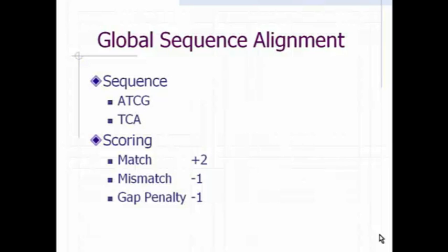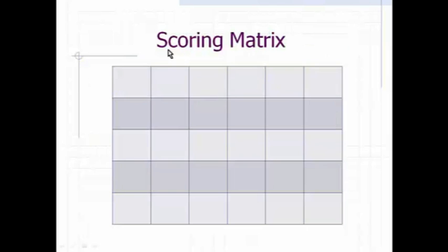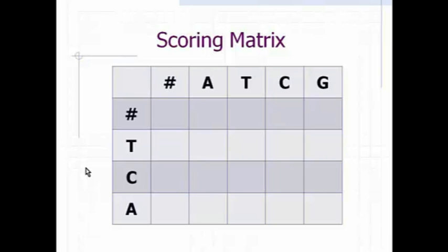First we will make a matrix and place our sequences at both coordinates. At any coordinate we have to put a gap — it is very important and the gap aligns to the initial threshold. We put our sequences ATCG and TCA to both coordinates, and we put a gap penalty here and here, and this gap penalty leads us to the initial threshold.